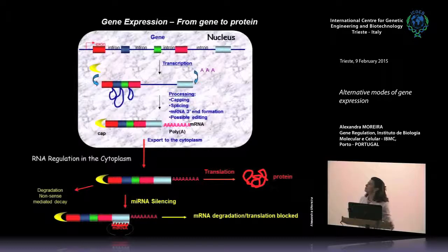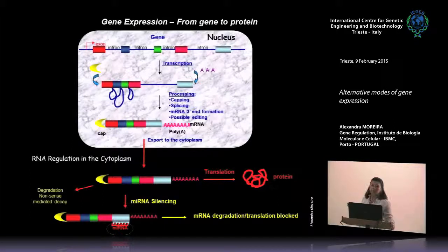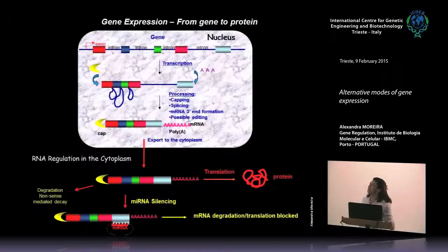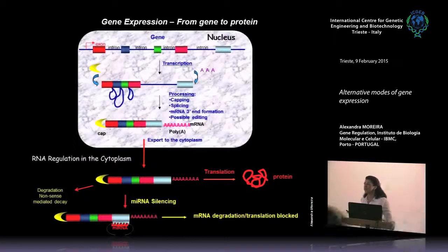To get things in perspective: this is the nucleus where you have genes or transcriptional units with exons and introns. The gene is transcribed by RNA Pol2. During transcription, several steps of RNA processing occur that are really important for the life of the mRNA — in particular five-prime capping, splicing of the introns, and mRNA three-prime maturation with the addition of a poly-A tail. Only when an mRNA has a five-prime cap, spliced introns, and a poly-A tail can it be exported to the cytoplasm, where it can go to decay, be silenced by microRNA mechanisms, or eventually be translated into a protein.